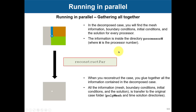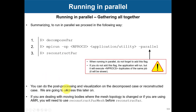At the end, for post-processing, you can put everything back together using `reconstructPar`. It will reconstruct everything and put it back for post-processing, but this step is optional. So your command-line steps are: `decomposePar`, then `mpirun -np` with the number of processors and the utility and `-parallel`, and then optionally `reconstructPar` at the end.